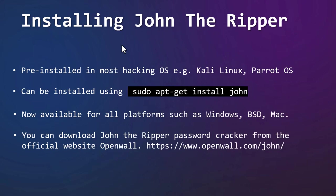How to install John the Ripper: This tool is already present in Kali Linux and other Linux-based operating systems, and can be run by opening the terminal and running the john command. But in case John the Ripper is not installed in your Linux system, you can install it by running the command in your terminal: sudo apt-get install john. If you are using different Linux distributions like Ubuntu, Fedora, Arch, etc., then you can install it by running the below single command.